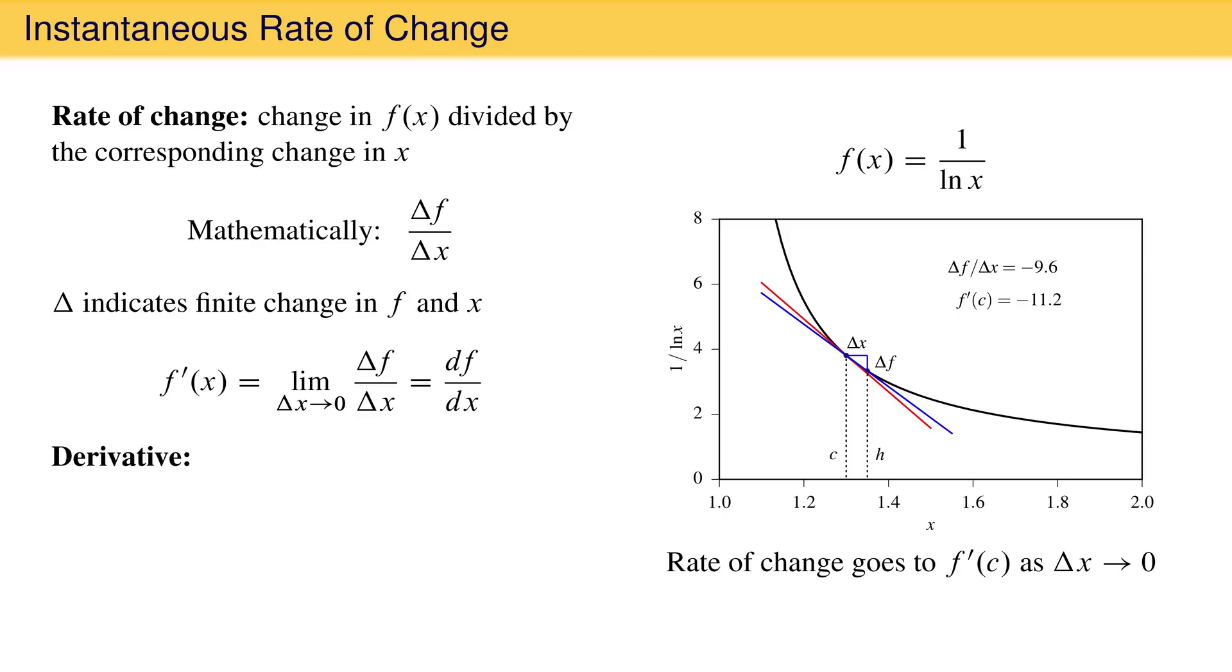The derivative of a function at a point is therefore the rate of change of that function at that point. To distinguish this from the average rate of change over a finite interval, this rate of change is called an instantaneous rate of change.